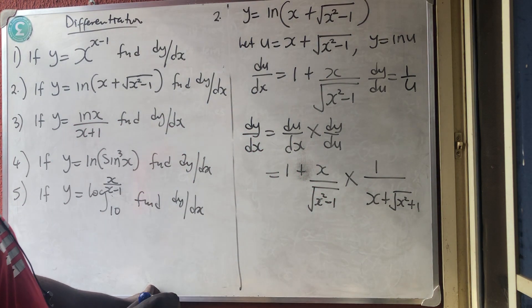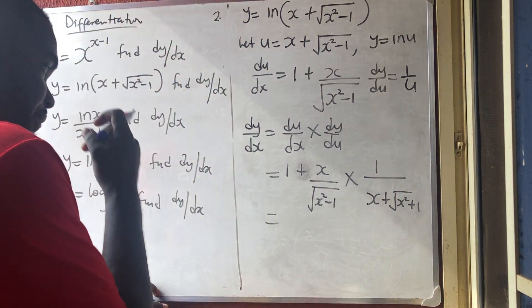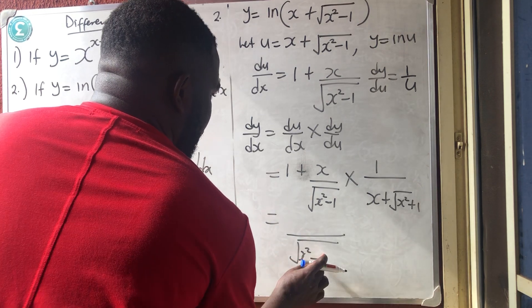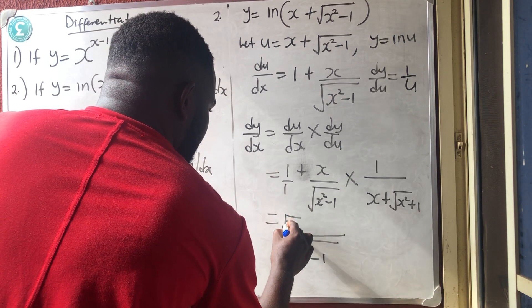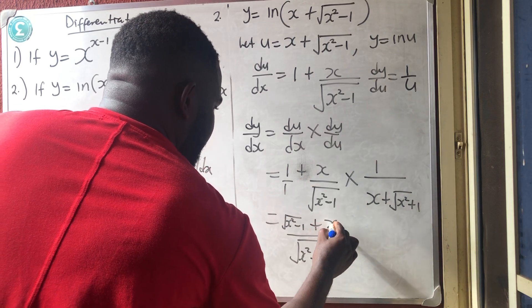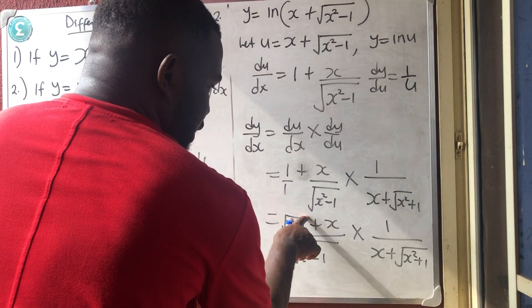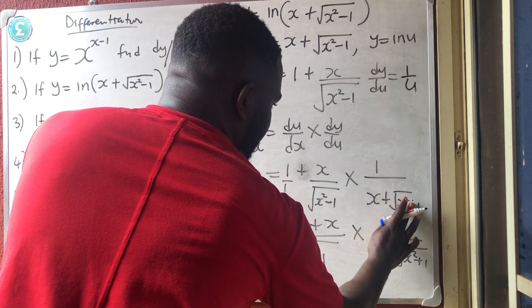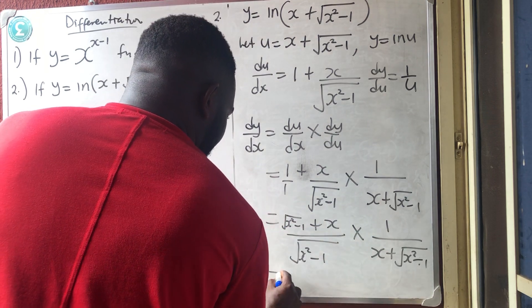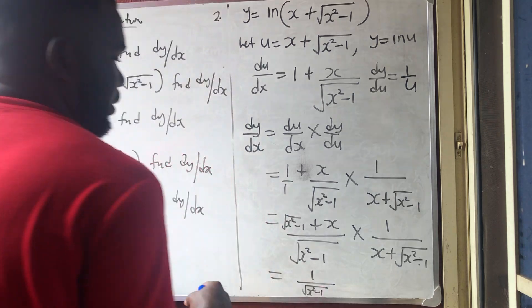When they multiply, the common factor (x + √(x²−1)) in the numerator and denominator cancels out, giving the final answer: dy/dx equals 1 over the square root of x squared minus 1. That is the answer for question 2.